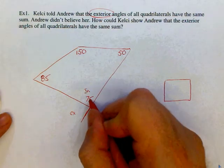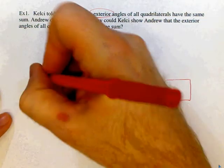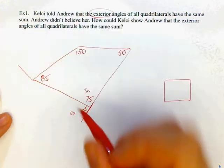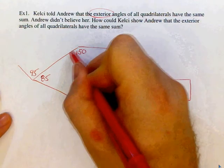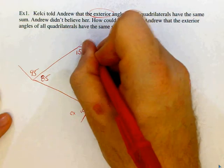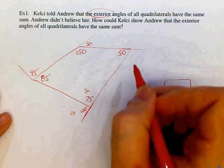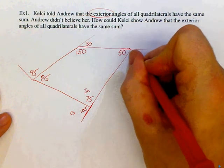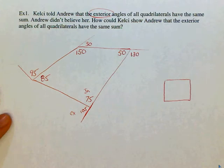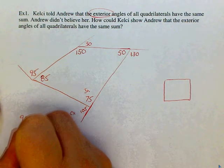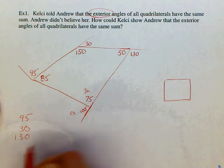So if this is 75, this is 105. Now we are going to extend this line. And say that if this is 85, this must be 95. Then let's extend this line. If this is 150, the exterior must be 30. And finally we will extend this line. And we will say that if this is 50, this must be 130.